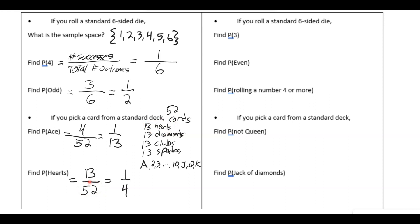All right, go ahead and pause the video while you work on the right side. So the probability of getting a three is one-sixth. The probability of an even is three-sixths, which reduces to one-half. The probability of getting a four or more is also three-sixths, which reduces to one-half.